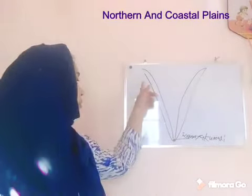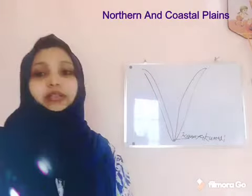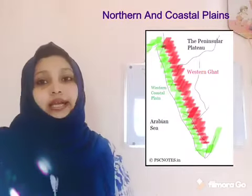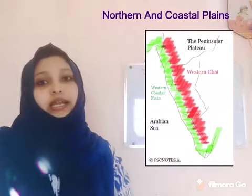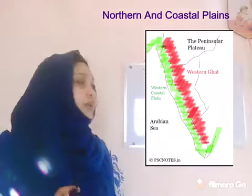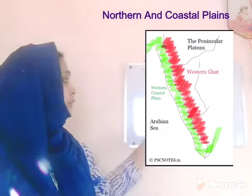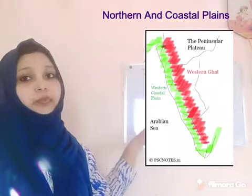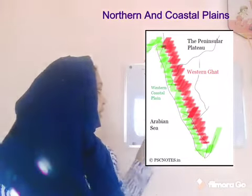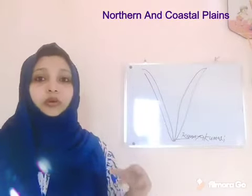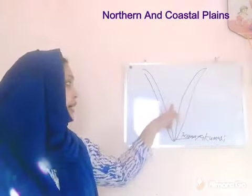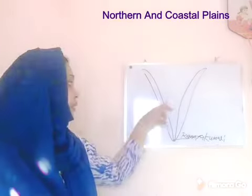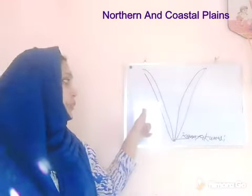Now we will move on to the western coastal plain. The western coastal plain stretches from Gujarat to Kerala. It lies between the Western Ghats and the Arabian Sea. The eastern border of Kerala is the Western Ghats.